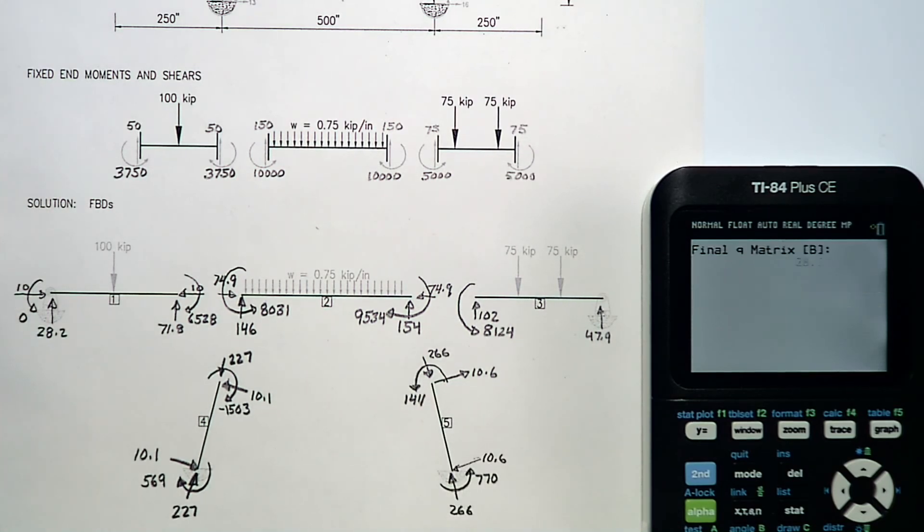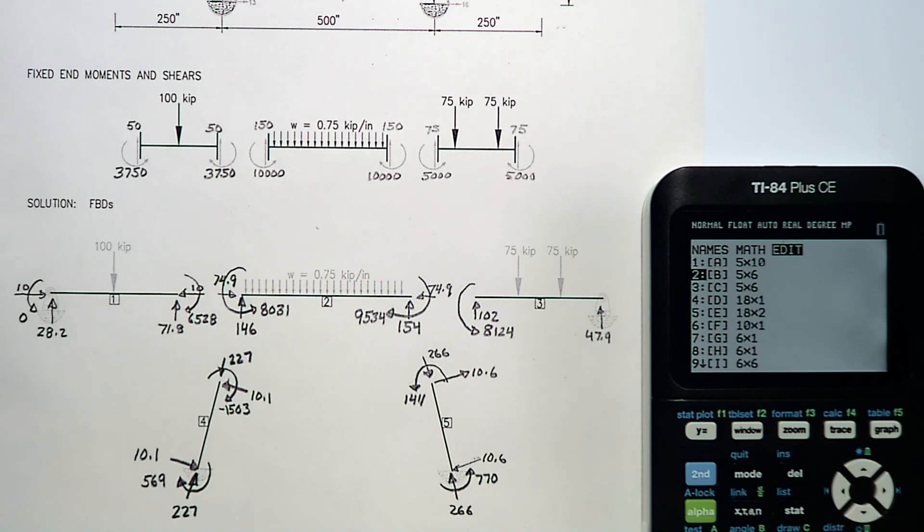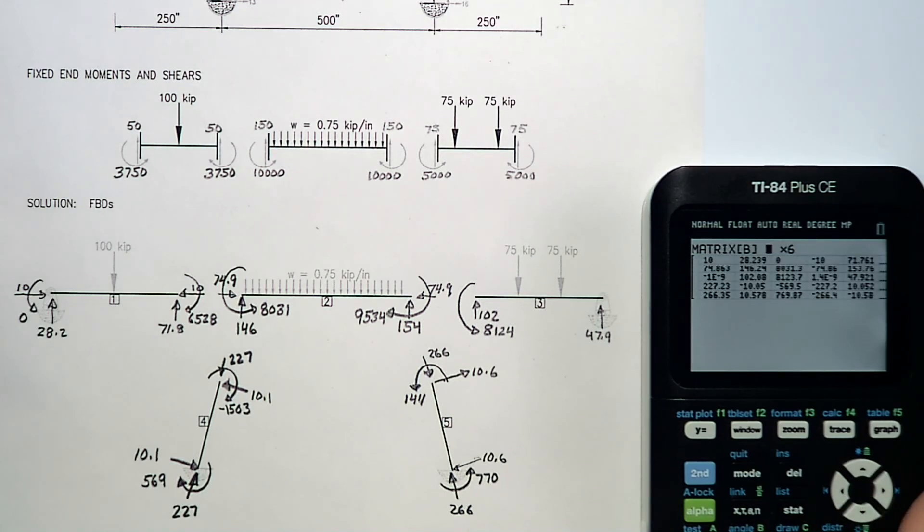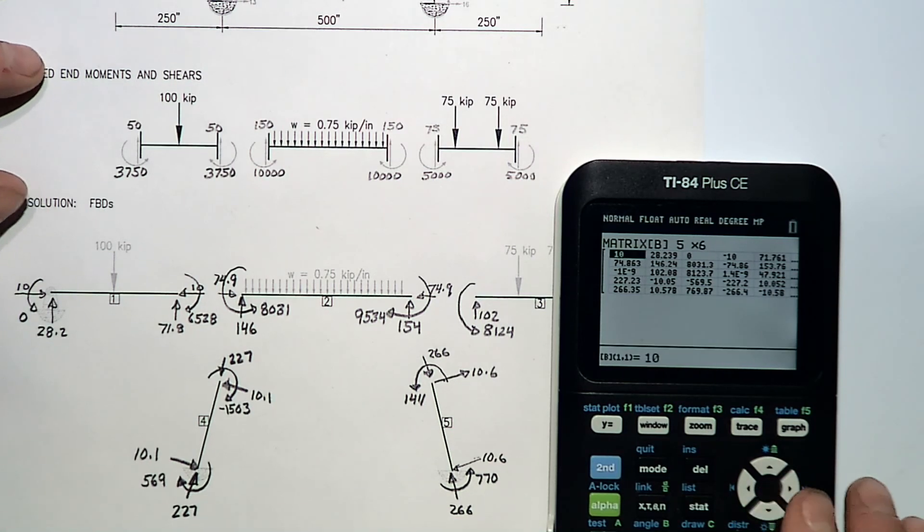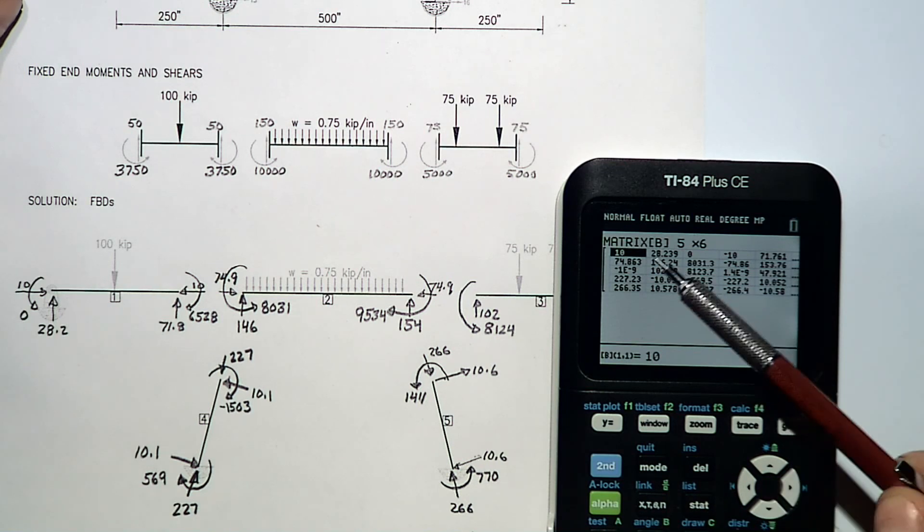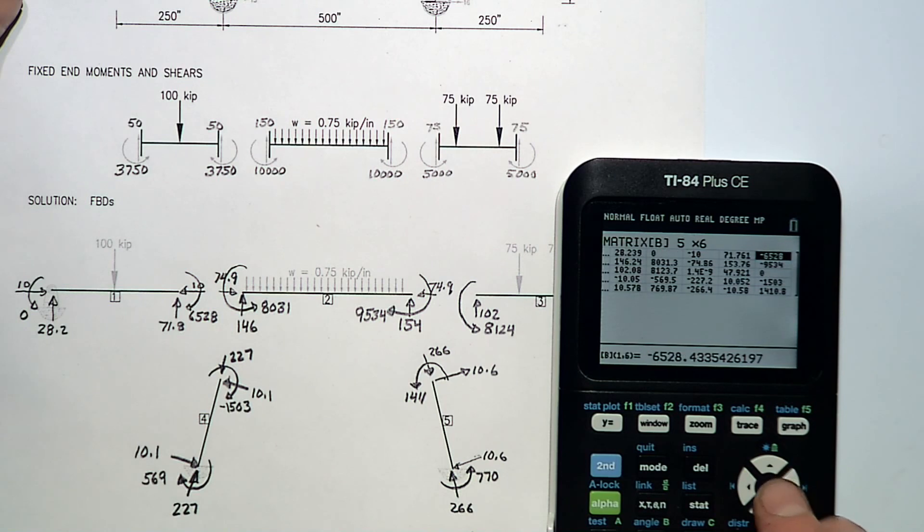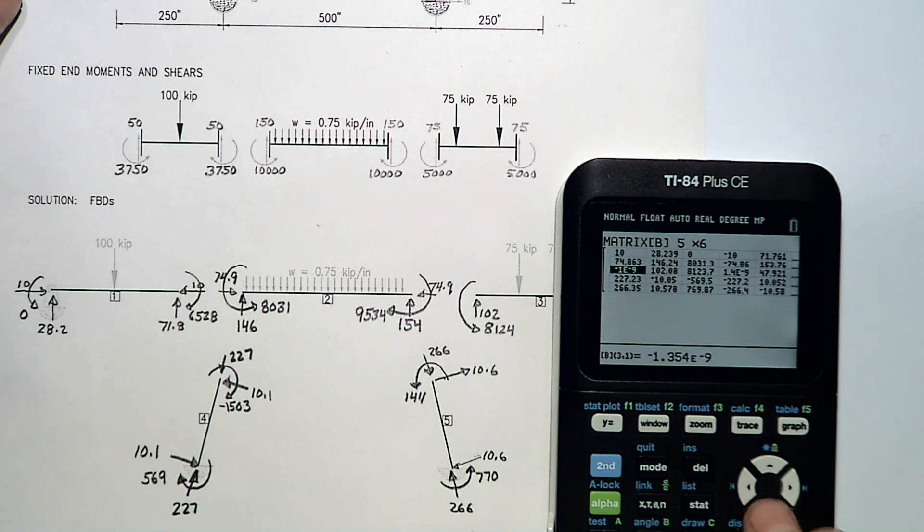Our final is to just give the complete matrix. If we wanted to refer to matrices, we can recall that matrix. Then we're able to go through every line. Each row represents a different member. Member one would have a near end axial of 10, near end shear, near end moment, far axial, far shear, far moment, and so on. The next row would be member two, member three, member four, member five, etc.